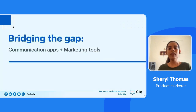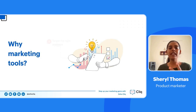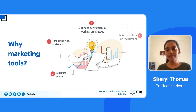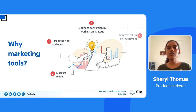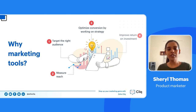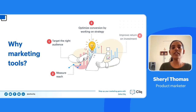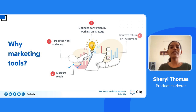Now that we've seen how marketers communicate to get work done, let's look at how to make their work count and bridge the gap between marketing tools and communication apps. Performance metrics play a huge role in every marketer's journey. Every ad, web page, social media post, eBook, or webinar needs to be measured in terms of impressions, engagement, conversions, and return on investment. Marketing tools help you understand if your efforts are paying off and whether you're targeting the right audience.